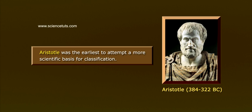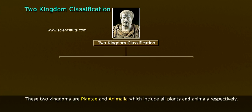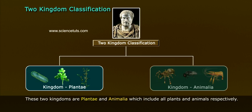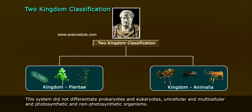Aristotle was the earliest to attempt a scientific basis for classification. The 2 Kingdom System of Classification was developed during Linnaeus' time. These two kingdoms are Plantae and Animalia, which include all plants and animals respectively. This system did not differentiate prokaryotes and eukaryotes, unicellular and multicellular, and photosynthetic and non-photosynthetic organisms.